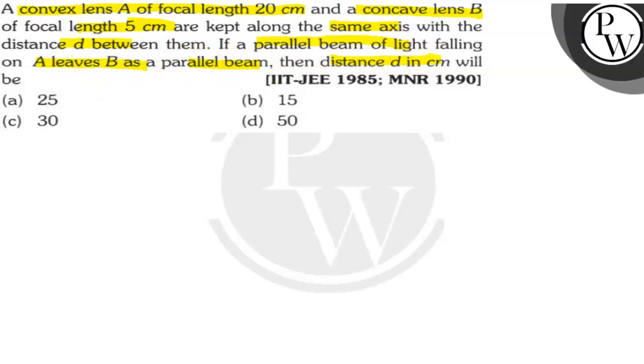We have a convex lens A of focal length 20 cm and a concave lens B of focal length 5 cm. They are on the same axis with distance D between them. Same parallel beam, so what will distance D be?